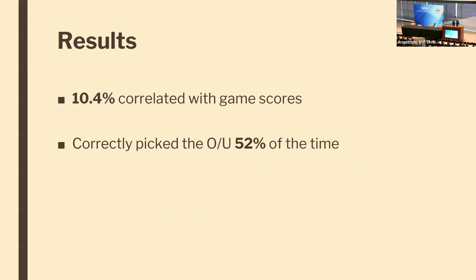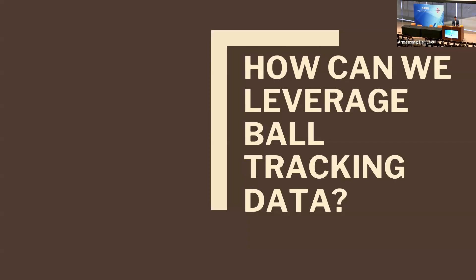Here are the results. When I simulated the games, I got 10.4% correlation with real scores, and when comparing to the betting lines, the correct outcome was picked 52% of the time. These results are promising, but I know we can do better — the prevalence of ball tracking data opens the door for a lot of improvements.